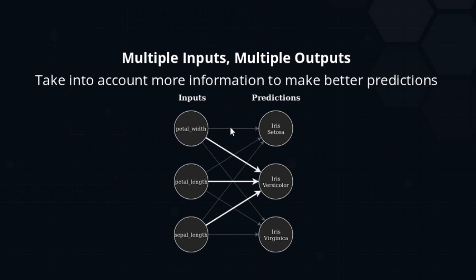There are two ways of thinking about this. You can imagine three weights coming out of each input, but it makes a lot more sense to think about three outputs each accepting three different inputs, because these outputs are more or less independent predictions. If we ignore the two bottom outputs and just think about the first one, it's just the usual prediction that takes a weighted sum of the inputs. So I think of it as three completely independent dot products — three independent weighted sums of the inputs.